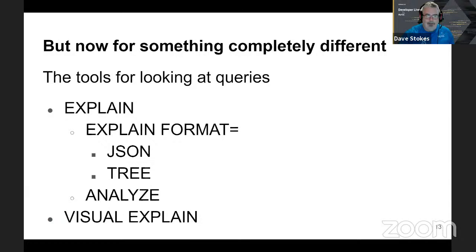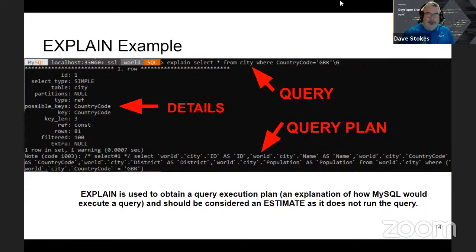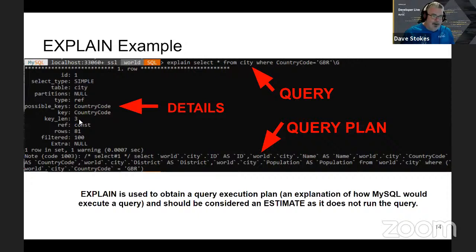There are different types of EXPLAIN: straight EXPLAIN, EXPLAIN with different formats, EXPLAIN ANALYZE, and visual EXPLAIN. Here's an example of running EXPLAIN on a query — put EXPLAIN in front: 'EXPLAIN SELECT * FROM city WHERE country_code = GBR'. Over here are the details the optimizer gives back: we're hitting the table city, we have a reference to country_code equals GBR. Possible keys or indexes is country_code — the index length of 3 is important, and 'filtered' tells an estimated percentage of rows. Down here is the actual query plan where the optimizer takes your query and rewrites it so the database can return what you asked for.